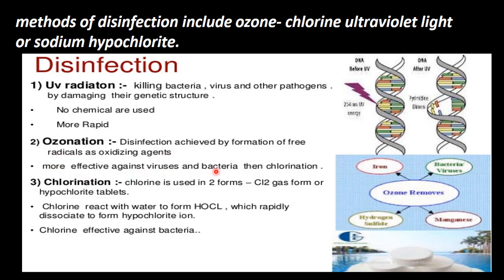Chlorination is more effective against viruses and bacteria. Chlorine is used in liquid form or gaseous form, and when added to the effluent, many microbes will die. Chlorine is used in two forms — as gas or hypochlorite tablets — and it reacts with water to form hypochlorous acid, which rapidly dissociates to form the hypochlorite ion. Chlorine is effective against bacteria, and this way the effluent can be disinfected.